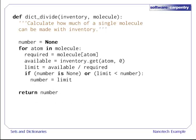Here's the function that divides one dictionary by another. We loop over all the atoms in the molecule we're trying to build, see what limits the available inventory puts on us, and return the minimum of all those results. This function uses a few patterns that come up frequently in many kinds of programs, so let's have a closer look.